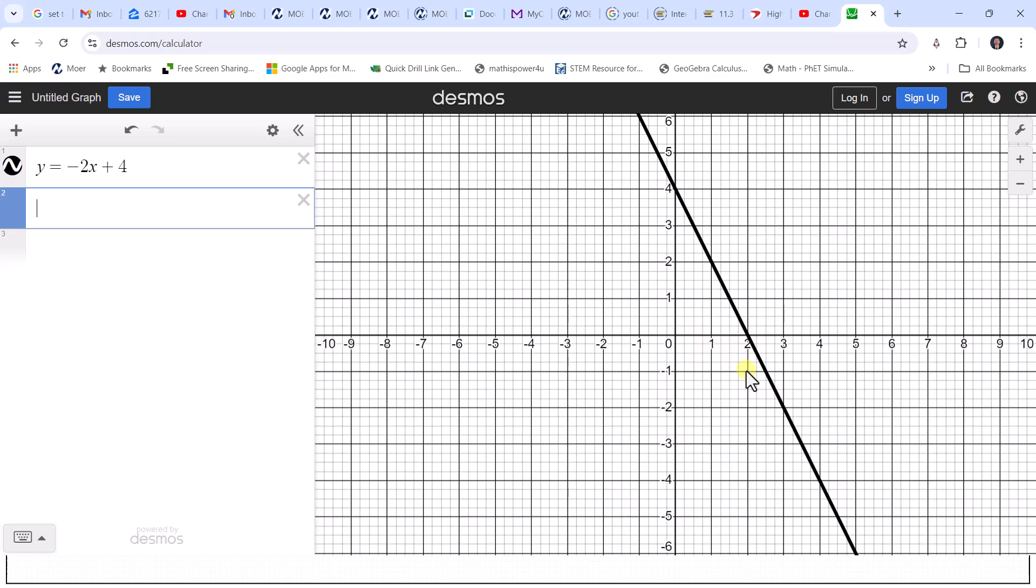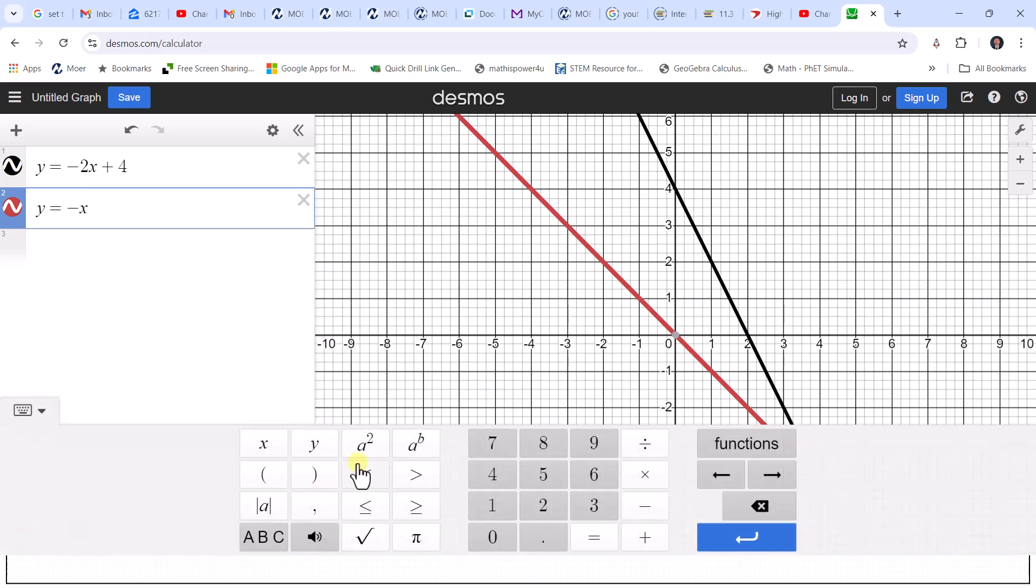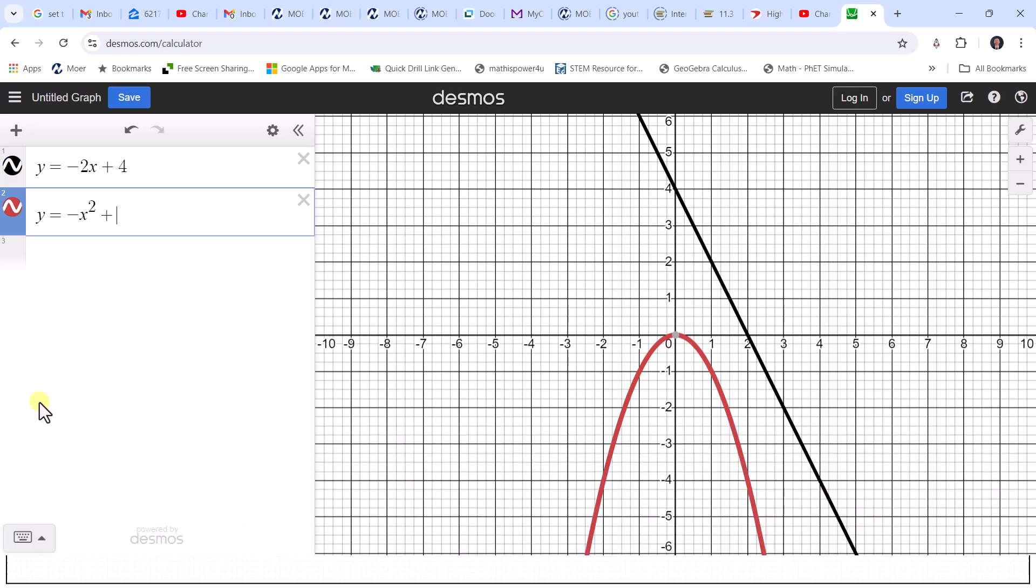And now we want to enter y equals negative x squared plus four. Y equals negative x. To enter the exponent of two, we can use the keyboard and press the caret key, which is shift six and then two. Or using the Desmos keypad below, we can click a squared to get an exponent of two. For any other exponent, we press a to the power of b. I'm going to press a squared. Let's close the Desmos keypad and then enter plus four.